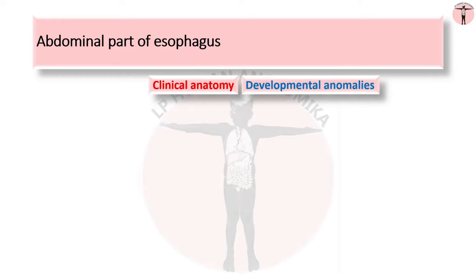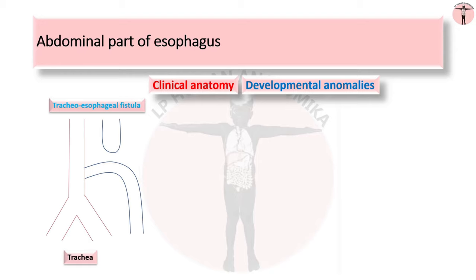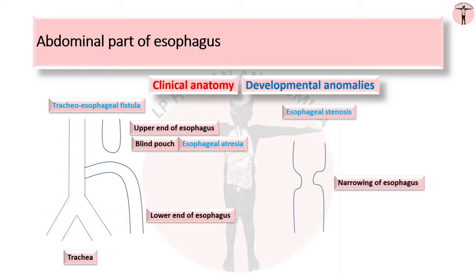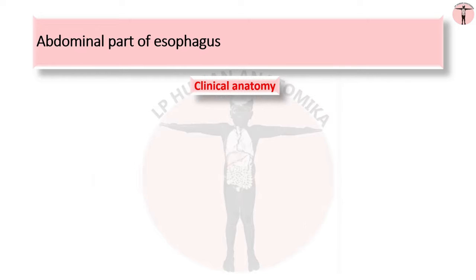Developmental anomalies are defects of the esophagus present at birth. In tracheoesophageal fistula, the separation of trachea and esophagus may not be complete; the proximal segment ends in a blind pouch causing esophageal atresia, and the distal segment communicates with the trachea. In esophageal stenosis, the lumen may be abnormally narrowed due to improper canalization. The lower end of the esophagus is commonly prone to inflammation, ulceration due to acid regurgitation from the stomach, and carcinoma.